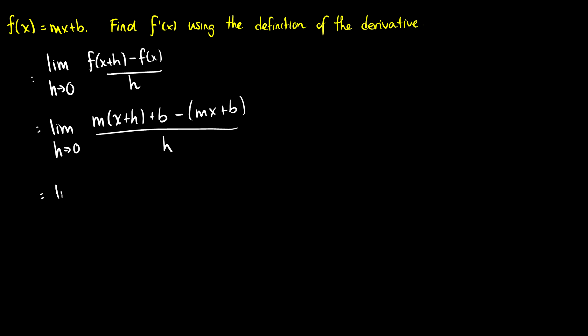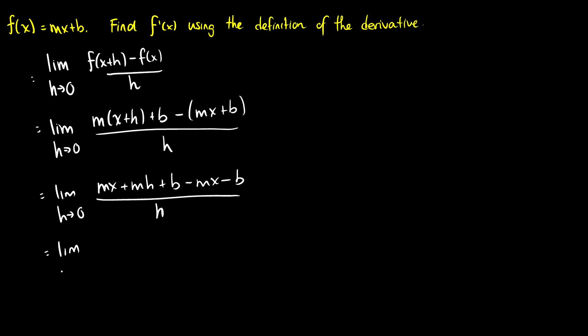This is equal to the limit as h goes to zero. If we expand this out we're going to get mx plus mh plus b minus mx minus b, all over h. We can do some cancellation — the mx's will cancel and the b's will cancel — so we'll be left with mh over h.